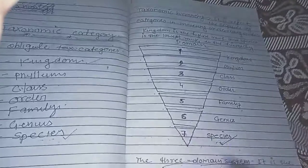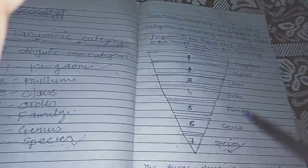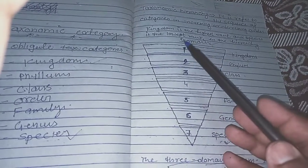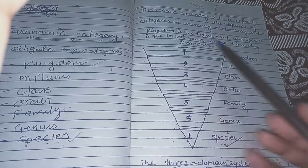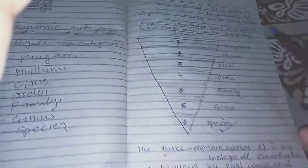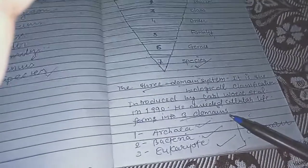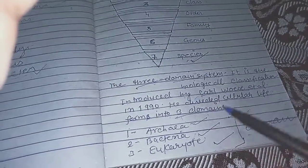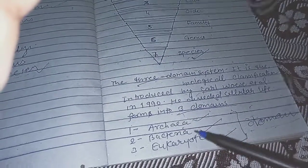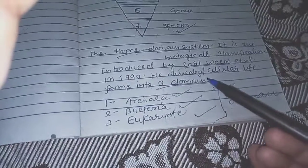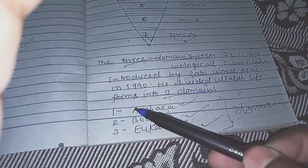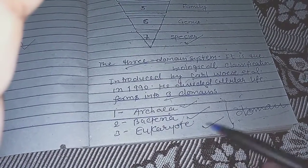In the Three Domain System, there are eight taxonomic categories, and the highest rank is Domain. This system was given by Karl Woese, who divided cellular life into three parts: Archaea, Bacteria, and Eukarya.